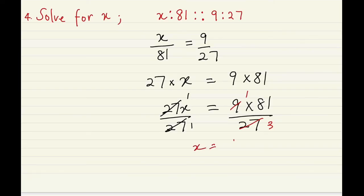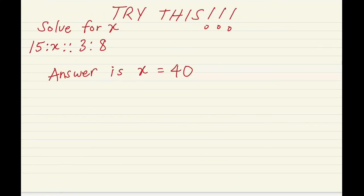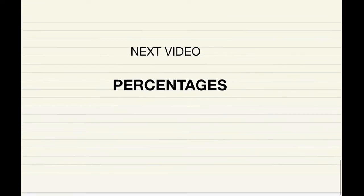So x equals 81 over 3. Dividing: 3 goes into 81 — 3 times 2 is 6, 3 times 7 is 21, remainder 0 — so the answer is 27. Therefore x equals 27. Now I want you to try this on your own: solve for x when 15 is to x as 3 is to 8. Your answer should be x equals 40. Let me know if you get it right. My next video is going to be on percentages.